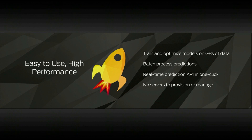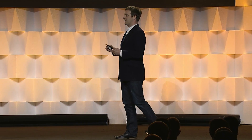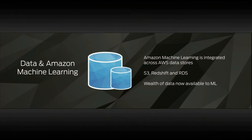Throughout the whole process, there are no servers to provision and no ongoing management — it's a fully managed end-to-end service. It comes integrated and ready to work with data already stored in S3, Amazon Redshift, and Amazon RDS, so developers can start applying machine learning and building predictive models straight away with the wealth of data they already have on the AWS platform.